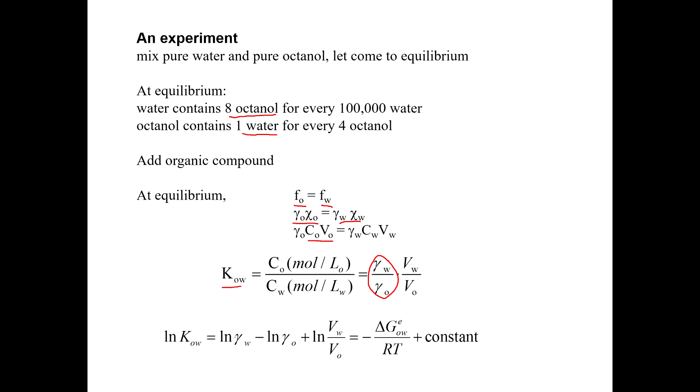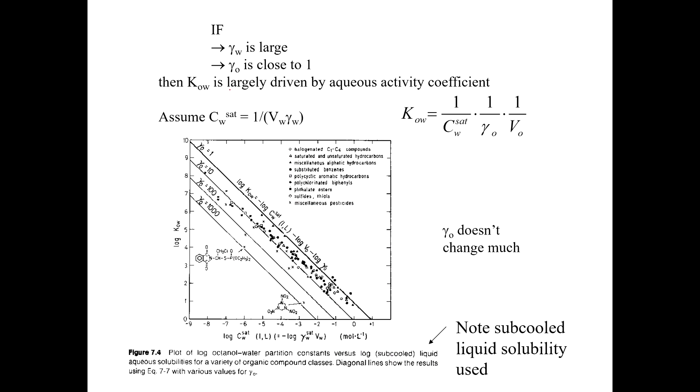So if we rewrite this equation, we can rewrite it in this form. And so we have the activity coefficient of the compound in water here minus the activity coefficient of the compound in octanol. And this becomes useful to us because if we think about it, we can assume that the activity coefficient in octanol is pretty close to 1. It's pretty ideal behavior. And if that's true, then KOW is largely driven by the aqueous activity coefficient.